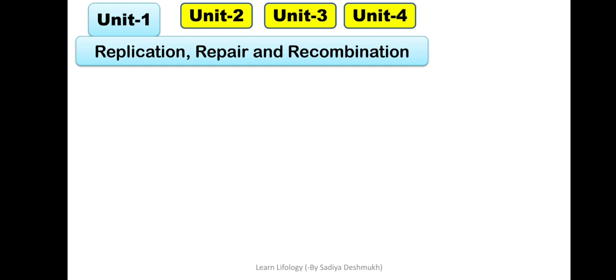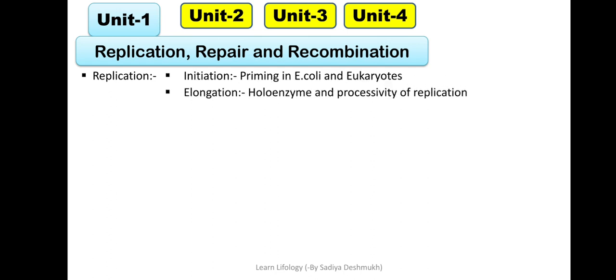We have four units in this paper. Your first unit is Replication, Repair, and Recombination. This paper is very important for all examinations you appear after your PG, like NET, SET, GATE, any PhD entrance, DBT-JRF, or ICMR. In replication, you need to study initiation with priming in E.coli and eukaryotes. I am going to make videos on this to help you understand the extent of what to study. Then elongation, holoenzyme, processivity of replication, and termination in prokaryotes and eukaryotes.